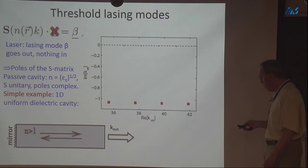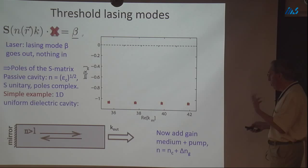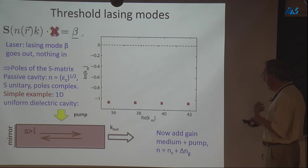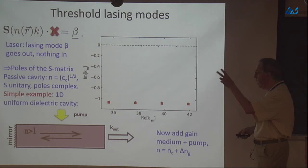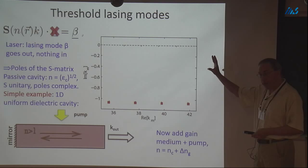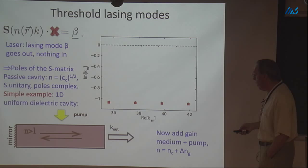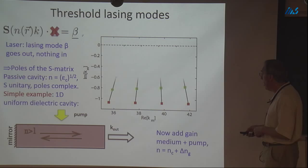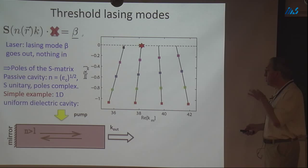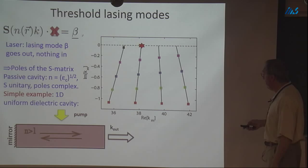For the passive cavity where the index involves only the real index of refraction, S is unitary and the poles are off the real axis. In the simple model — perfect mirror, partially reflecting mirror, one dimension — the poles are separated by cπ/L. With the gain medium and pump, we add an imaginary amplifying piece to the index. Starting from the transparency point (equal populations in upper and lower levels), we turn the pump on and follow the poles — they move upward continuously and eventually one reaches the real axis. A pole on the real axis is a purely outgoing solution at that frequency — the lasing transition.